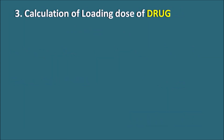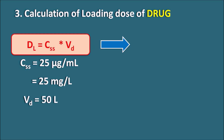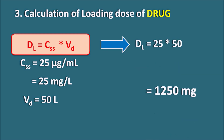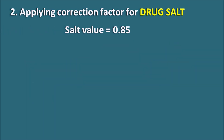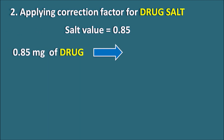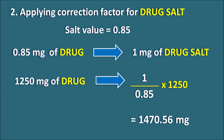Step 3 is the calculation of the loading dose. The loading dose DL = CSS × VD = 25 mg/L × 50 L = 1250 mg. This corresponds to the pure form of the drug. Applying the salt correction: since 0.85 mg of drug equals 1 mg of drug salt, the loading dose of the salt = 1/0.85 × 1250 = 1470.56 mg.